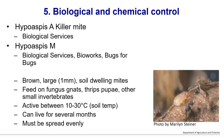The two predatory mite species — previously known as Hypoaspis — are commercially available through various Australian providers. They are about one millimetre, soil-dwelling, and feed on fungus gnat larvae and pupae, thrips pupae, and other small invertebrates. They are active at soil temperatures between about 10 and 30 degrees and live for several months. Because they don't have wings, they need to be spread evenly but will persist in growing media for quite some time.